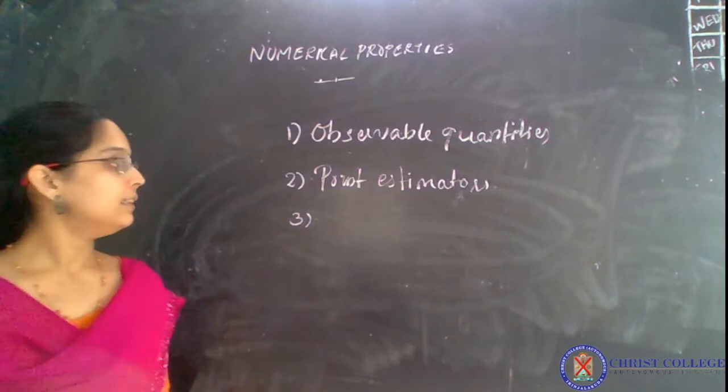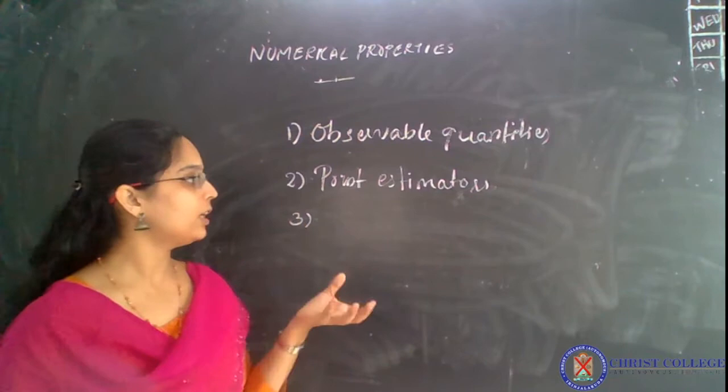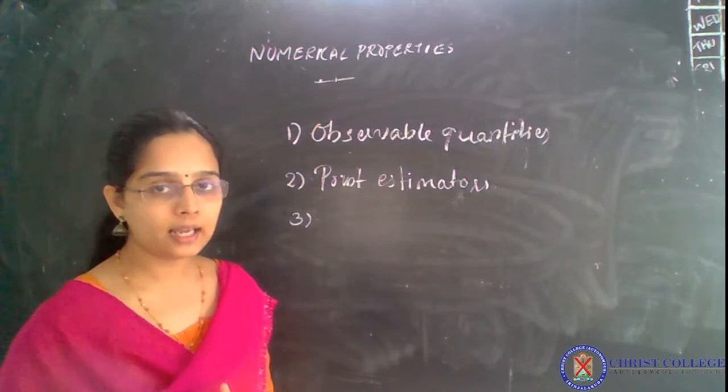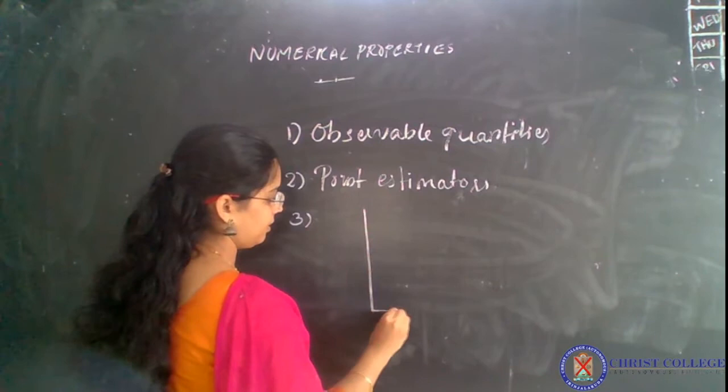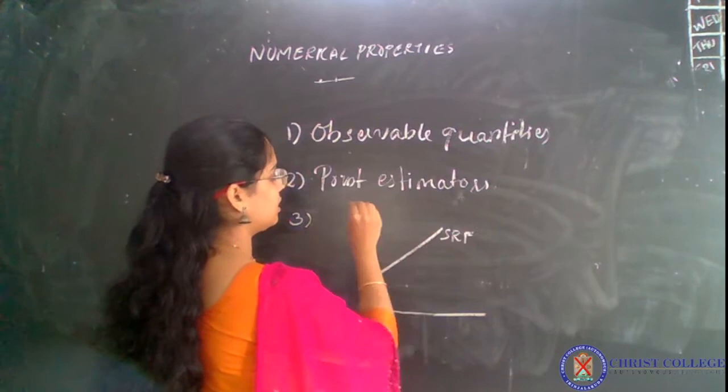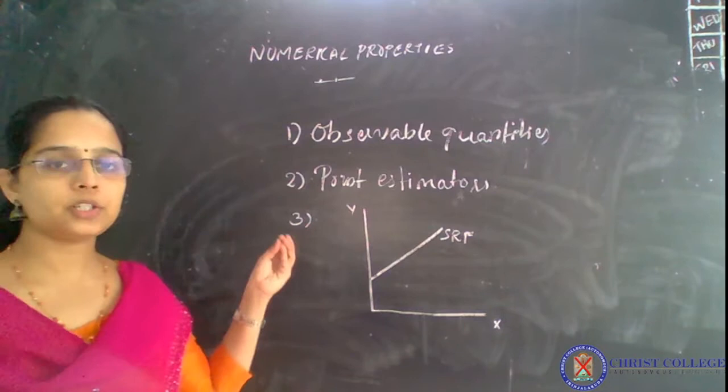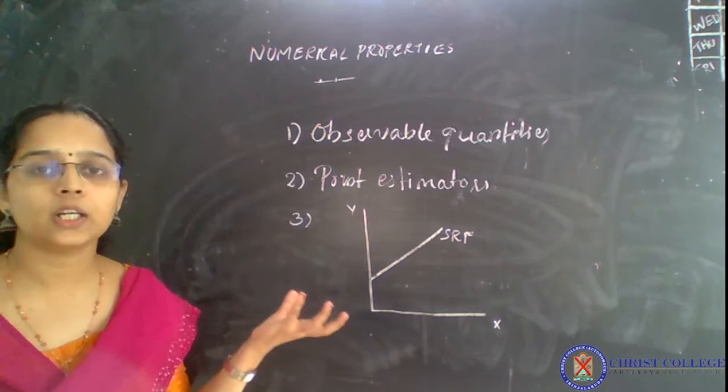The third property says that given the sample and the point estimator property, it will be very easy to identify the regression line or the sample regression function of our data. It is very easy to obtain this regression line by estimating the parameters, or using the observable quantities and the sample data that is provided.